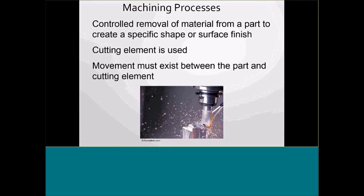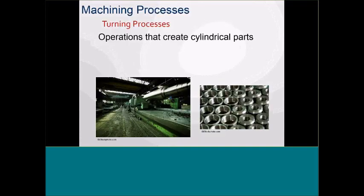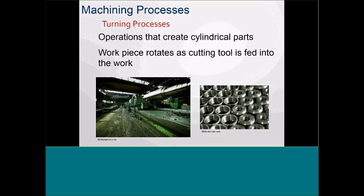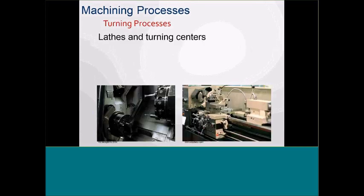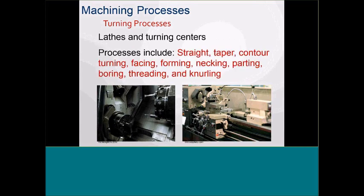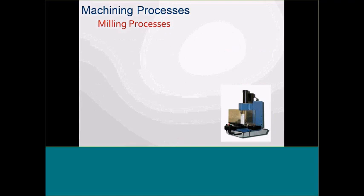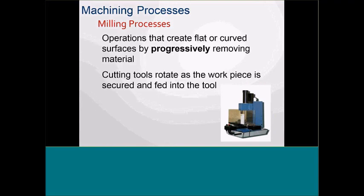In turning processes, the workpiece rotates and the cutting tool is fed into the work. We'll look at different processes and turning centers. Milling — whether flat or curved surfaces — we'll talk about slab milling, conventional milling, up milling, and down milling. Cutting tools rotate with the piece, whether vertical or horizontal. With all my lectures, I try to show videos of the various processes: milling, horizontal boring mill, slotting, key seating, angle cutting, straddle milling, dovetailing, and slab milling.